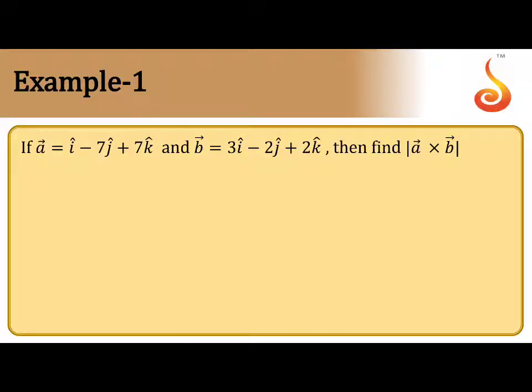So let us take first a bar cross b bar. Set up i cap, j cap, k cap, then follow the concept of determinant. Keep plus minus plus. Everyone knows about how to find a determinant. Now let us take the value of the determinant.